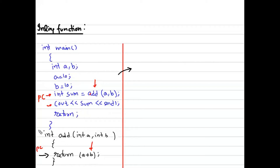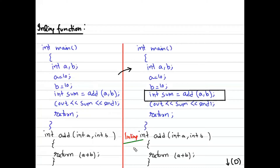To substitute code at the call site, C++ provides the inline function. In the same example, I've written the keyword 'inline' before the return type of the function. So the function still returns int and takes two int parameters, but now the compiler, when it reaches the call to 'add', knows this is an inline function and is responsible for substituting the function code right there. The program counter just executes the substituted code and continues to the next line.